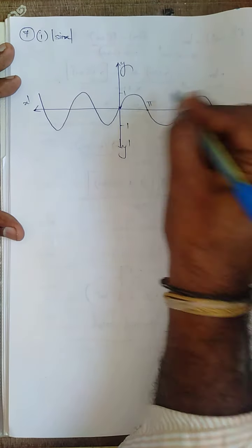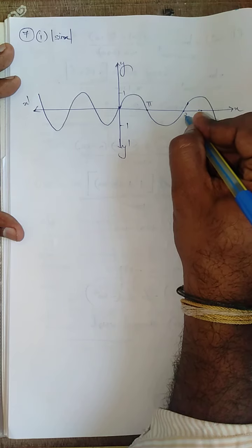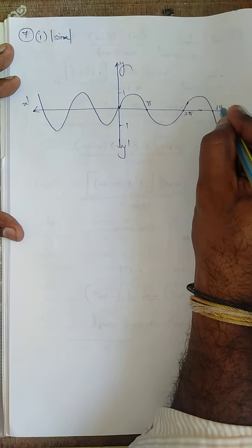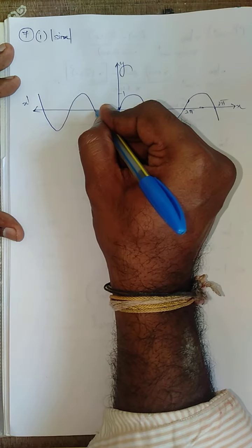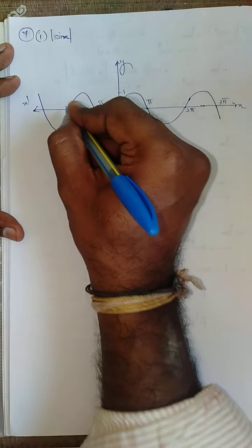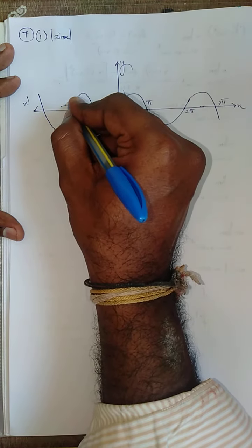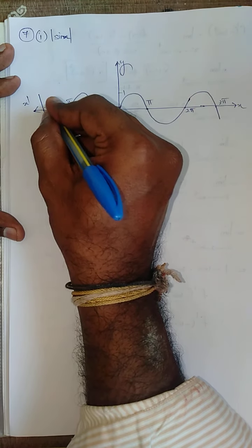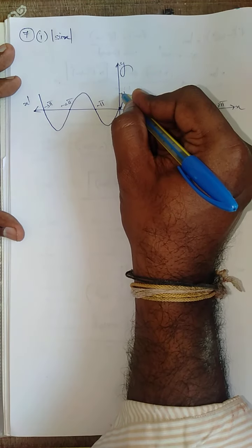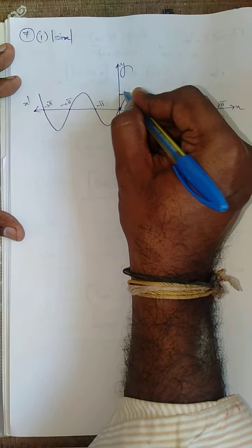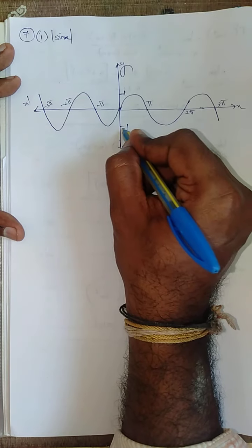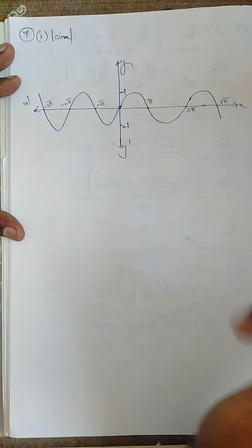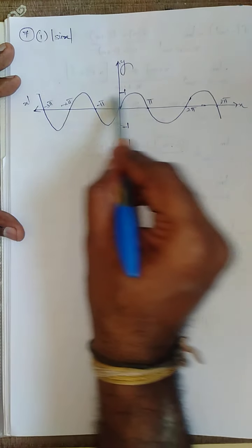This will be π, this will be 2π, this will be 3π, this will be minus π, this will be minus 2π, this will be minus 3π. This will be minus 1, this is plus 1, and this is minus of minus 1, so plus 1 and minus 1. The range will exist.